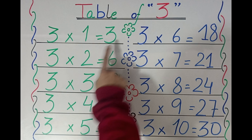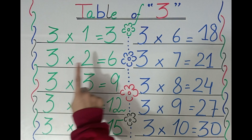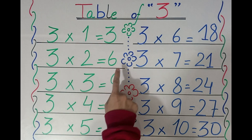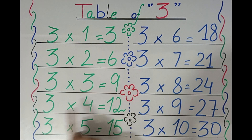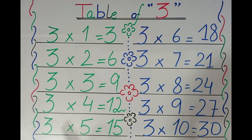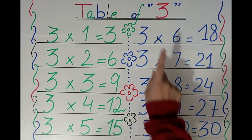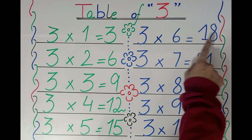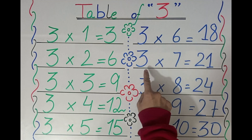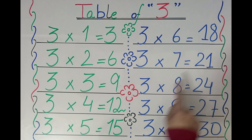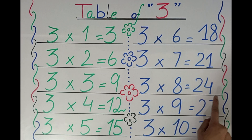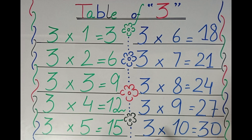So, three ones are three, three twos are six, three threes are nine, three fours are twelve, three fives are fifteen, three sixes are eighteen, three sevens are twenty-one, three eights are twenty-four, three nines are twenty-seven, three tens are thirty.